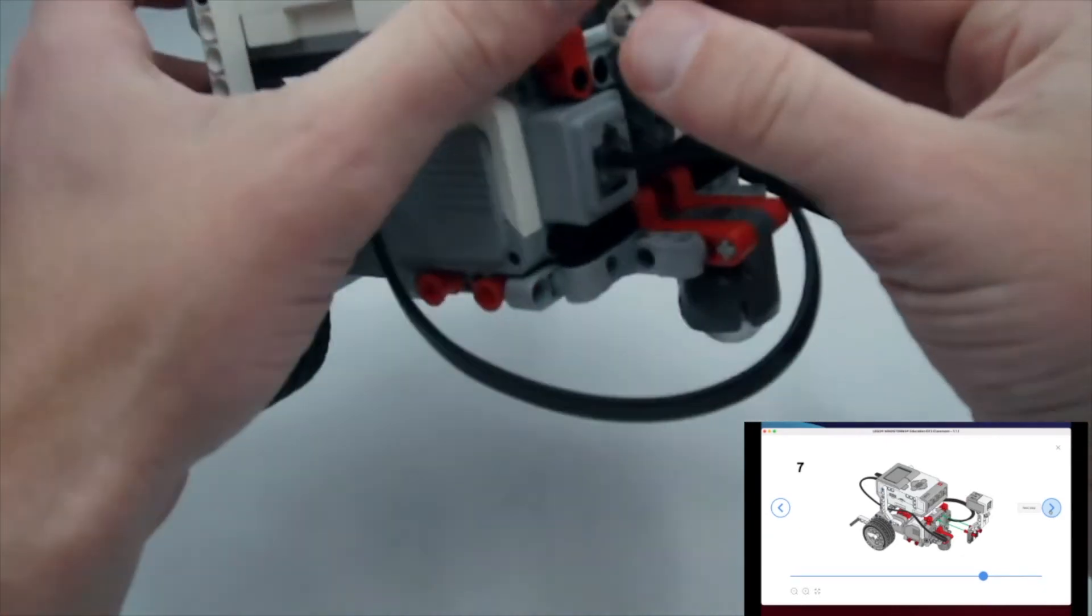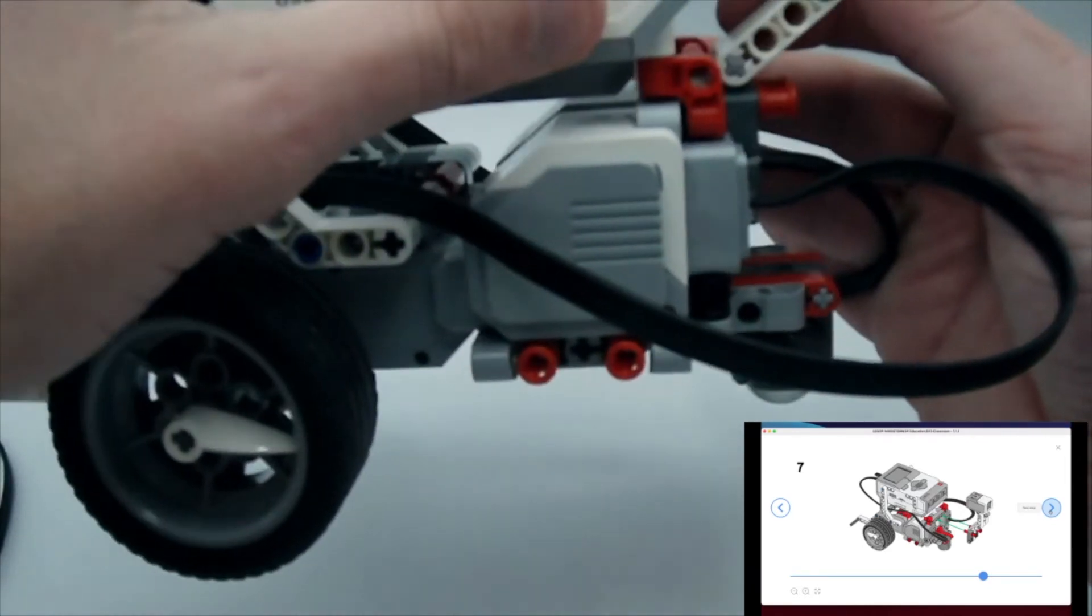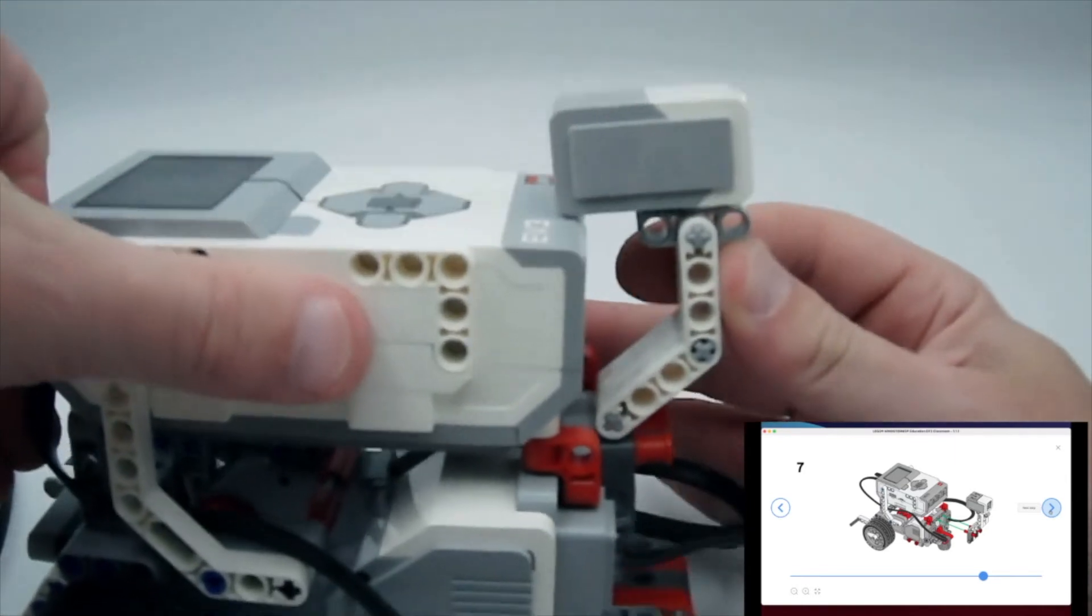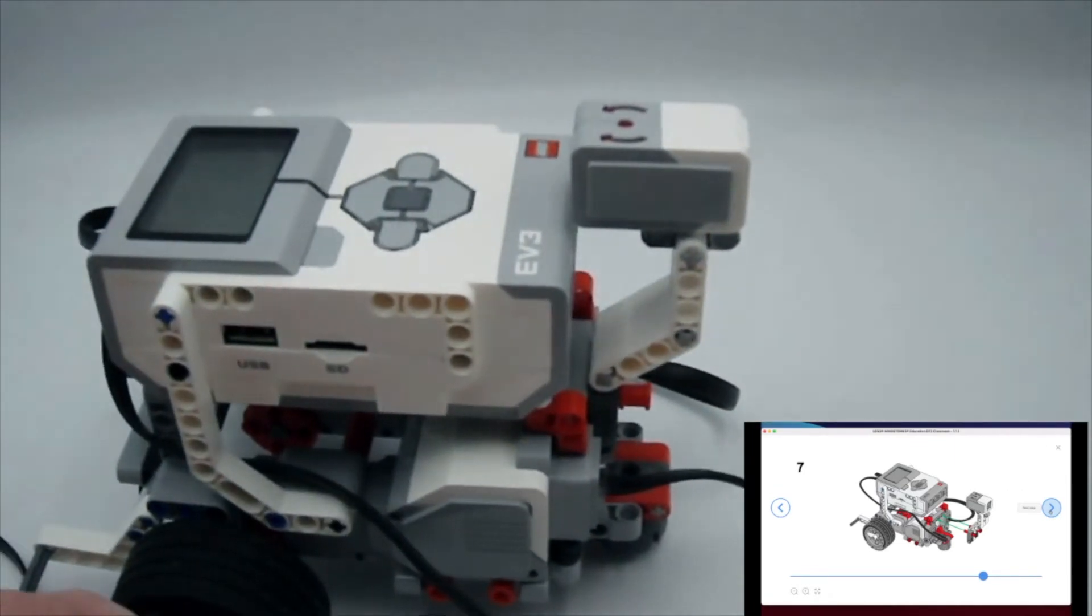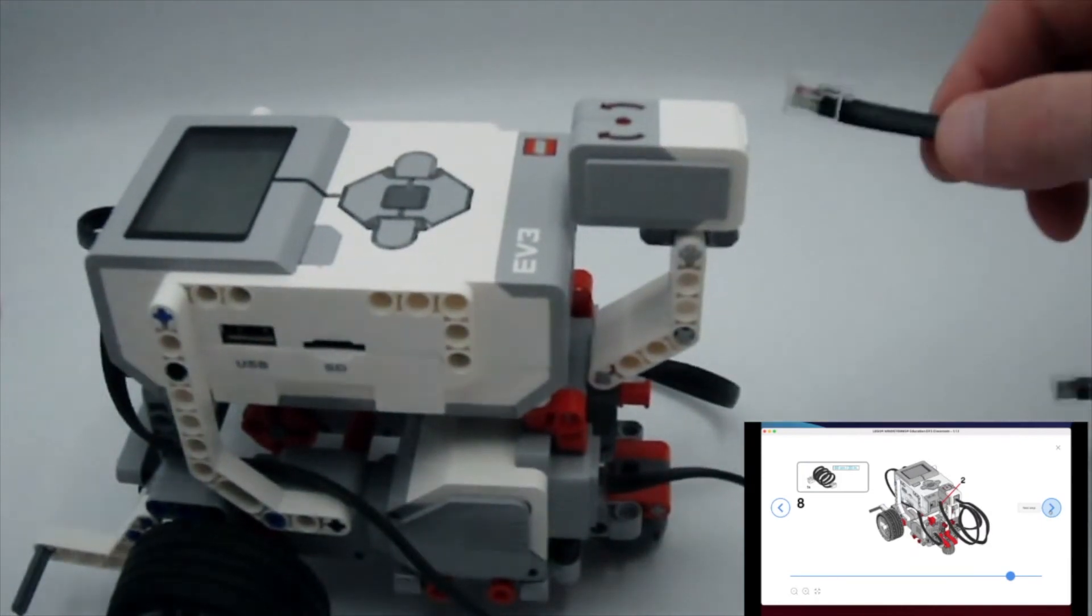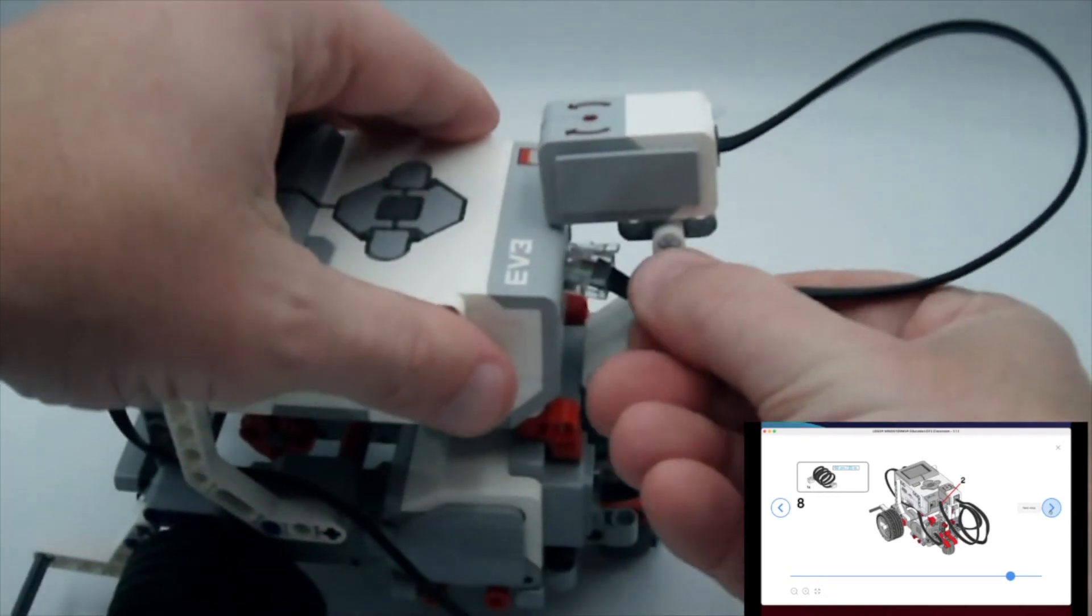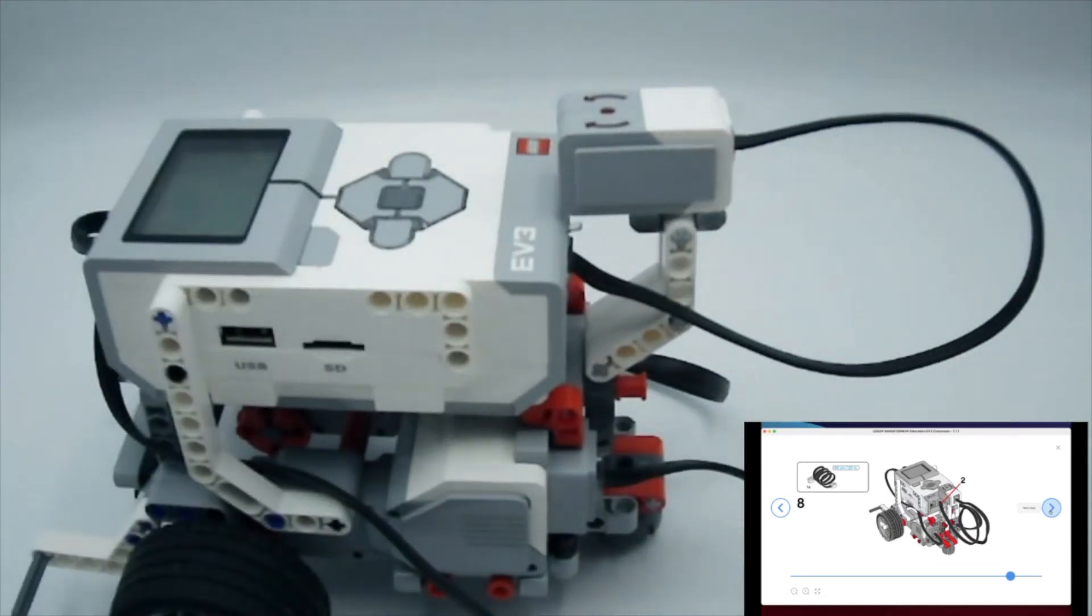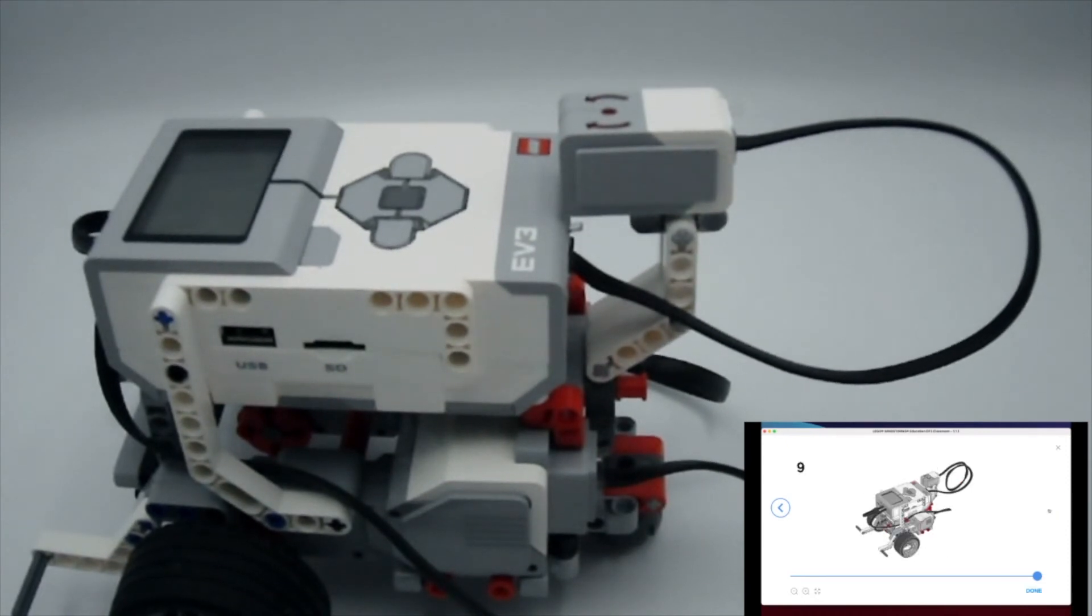So now we're just going to add the wire, which is going to go into port number two. Clip that in, slide that in, and we are in business. Alright my friends, let's keep rocking and rolling here with our gyro sensor.